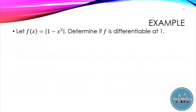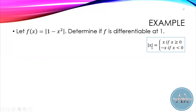Now to explain more on the topic, we have an example. Let f of x equal the absolute value of 1 minus x squared. The problem asks us to determine if the function f is differentiable at 1. Since this function involves absolute value, we need to follow the property of absolute value: absolute value equals x if x is greater than or equal to 0, and negative x if x is less than 0. We have to redefine the function by applying this property.